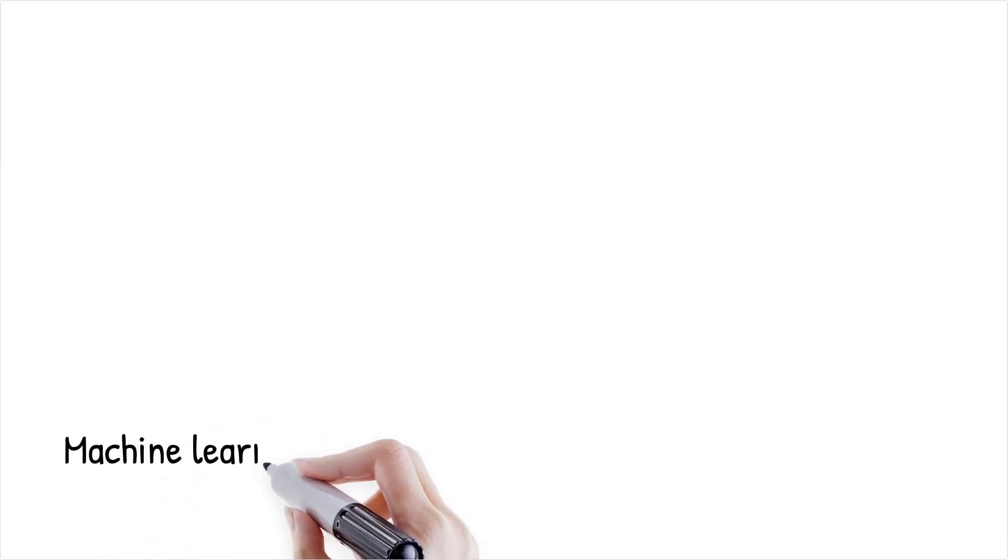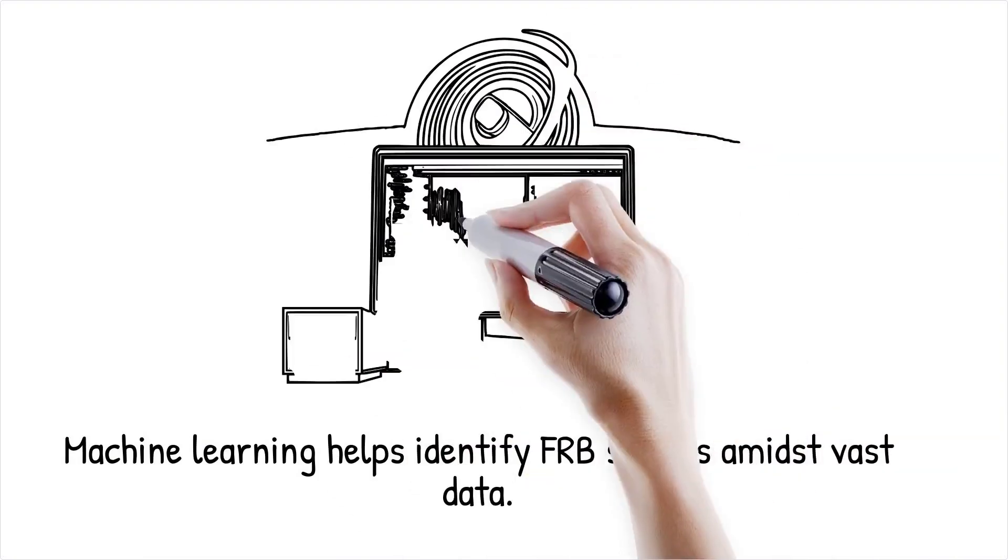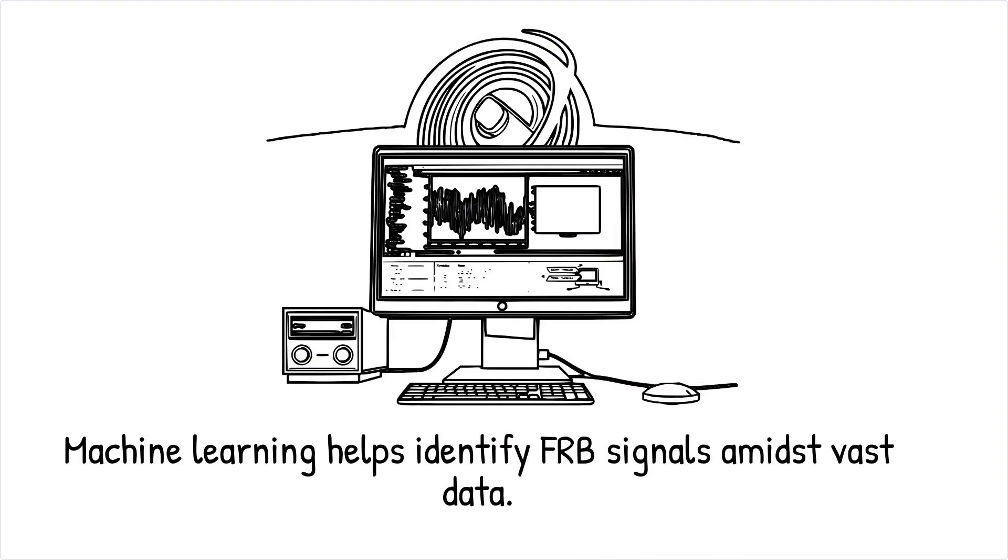Machine learning algorithms are now being used to automatically sift through vast data sets to identify FRB signals and distinguish them from terrestrial interference. Future missions may include space-based radio telescopes that could further enhance localization accuracy and provide clear insights into the origins of these mysterious bursts.